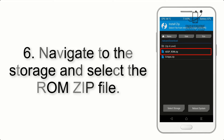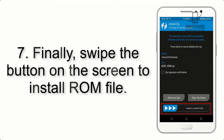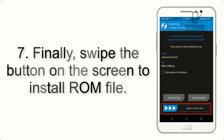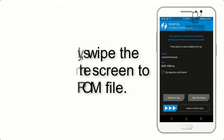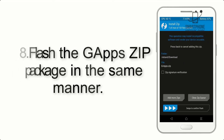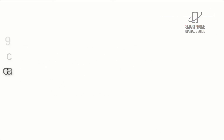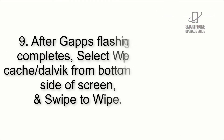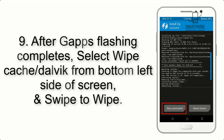Step 6: Navigate to the storage and select the ROM zip file. Step 7: Finally, swipe the button on the screen to install the ROM file. Step 8: Flash the GApps zip package in the same manner.